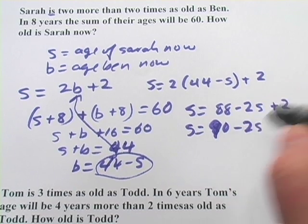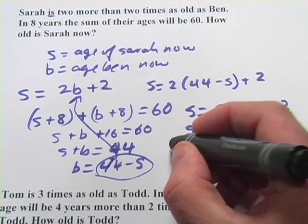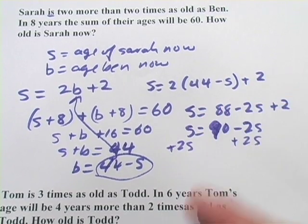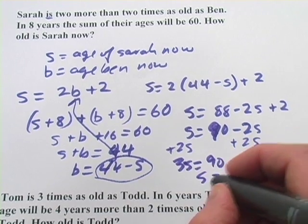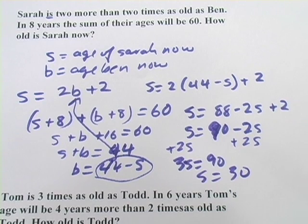And that would be, we'll add 2S to both sides. We'll get 3S equals 90. And then S equals 30, dividing both sides by 3. So Sarah is 30 right now.